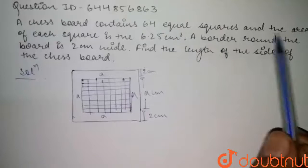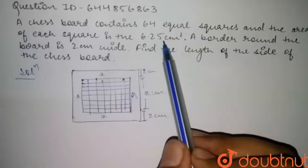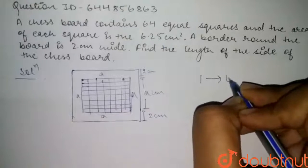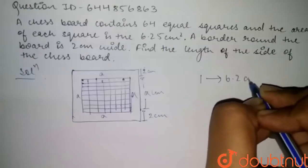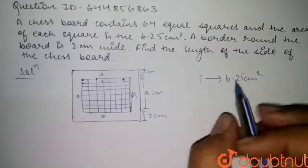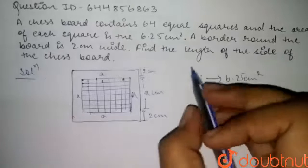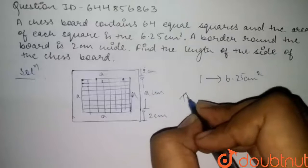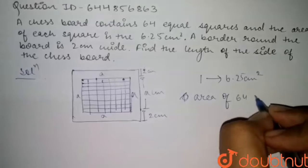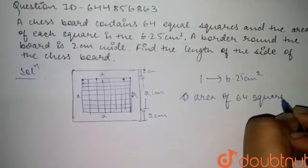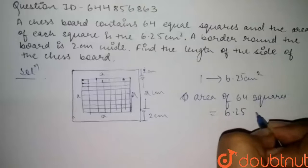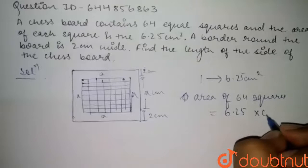Now, it is given in the question that the area of each square is 6.25 centimeter square. So the area of 64 squares equals 6.25 multiplied by 64 centimeter square.